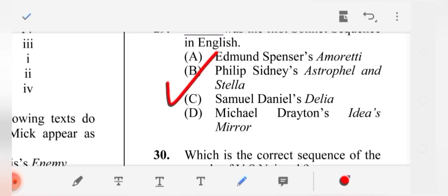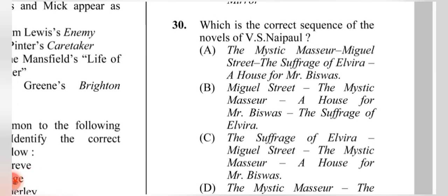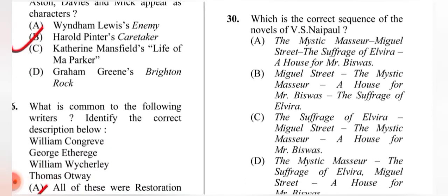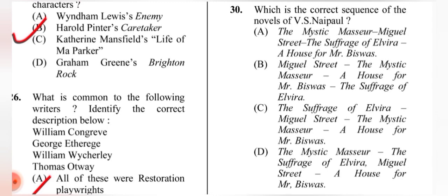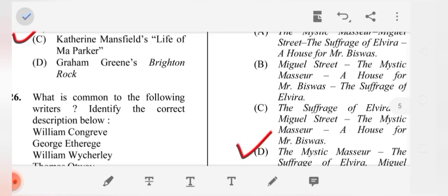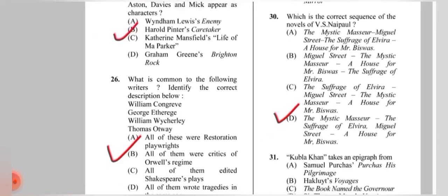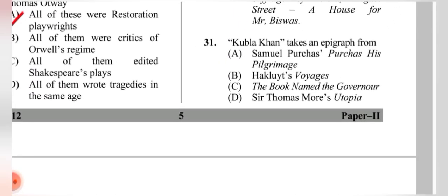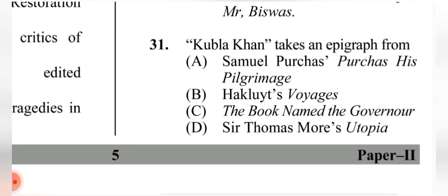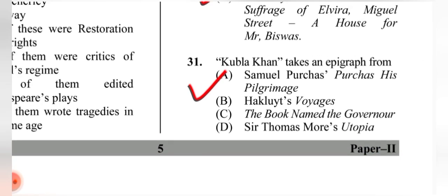Question 29: Which was the first sonnet sequence in English? The correct answer is (B) Philip Sidney's 'Astrophel and Stella.' Question 30: What is the correct sequence of BS Naipaul's novels? The correct answer is (D): 'The Mystic Masseur,' 'The Suffrage of Elvira,' 'Miguel Street,' 'A House for Mr Biswas.' Question 31: 'Kubla Khan' takes an epigraph from (A) Samuel Purchas — 'Purchas his Pilgrimage.'